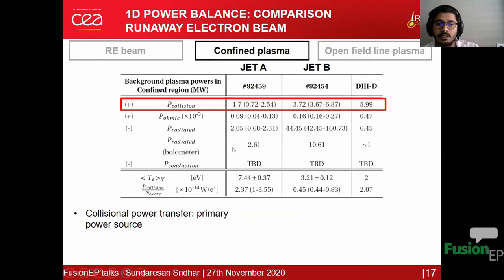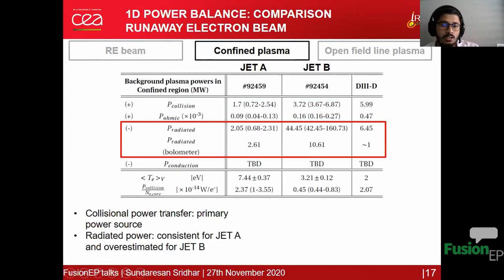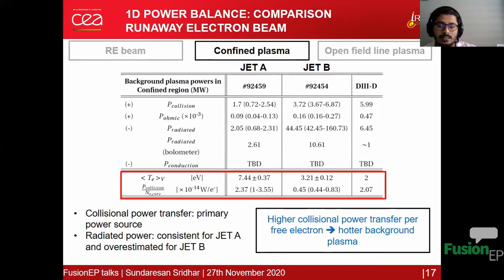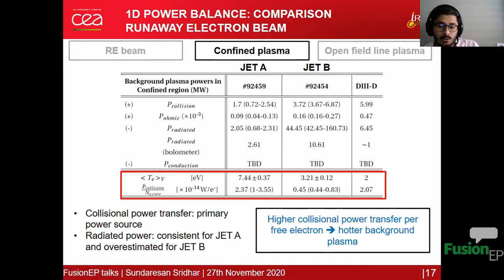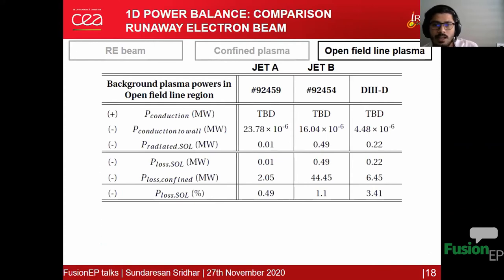For the confined background plasma, collision power transfer is the primary heating source. When estimating the radiated power based on the temperature profile from VUV spectroscopy, it is consistent for one discharge but not for another, possibly due to large uncertainties. An interesting observation is that discharges with higher background plasma electron temperature — around 7 eV compared to around 3 eV — have higher collision power transfer per free electron, which may explain the hotter background plasma in some JET discharges.